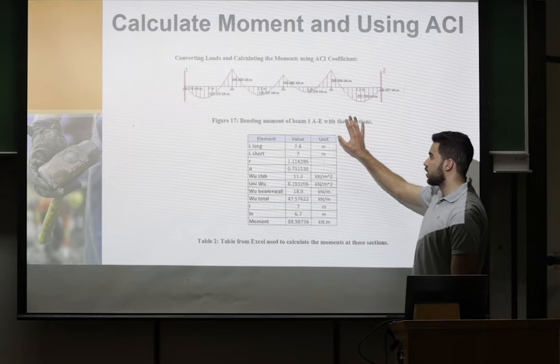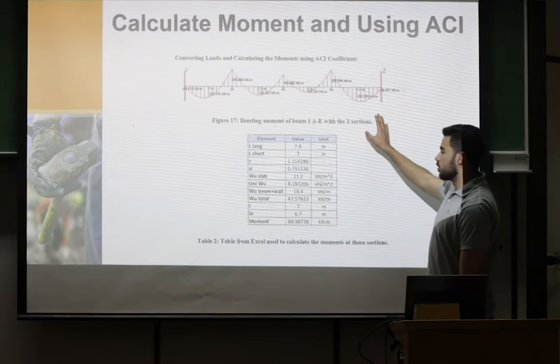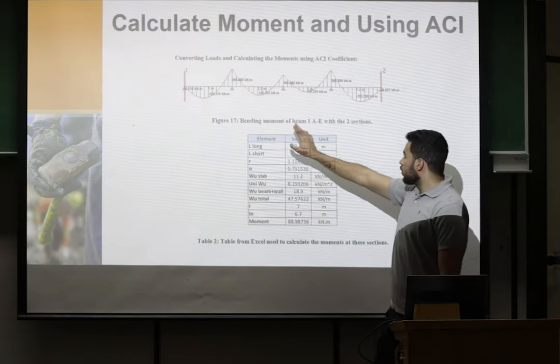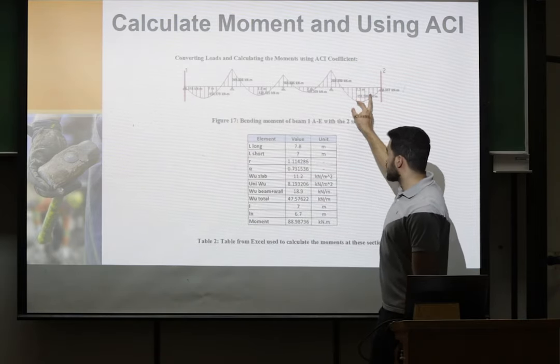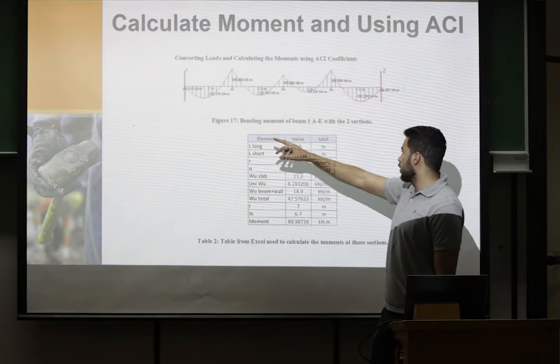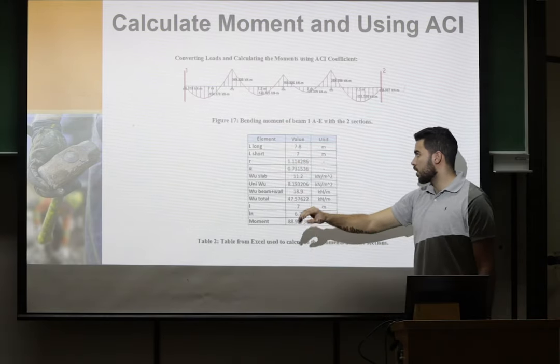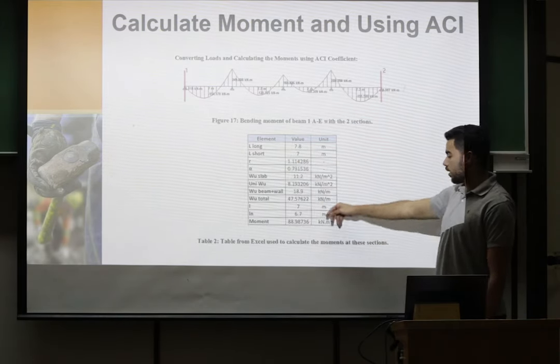So here we can see from STAD there is some numbers. These numbers we can just fix it by using ACI code as shown here in the table.